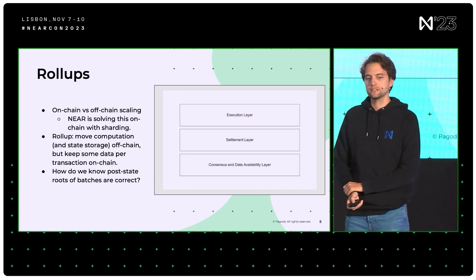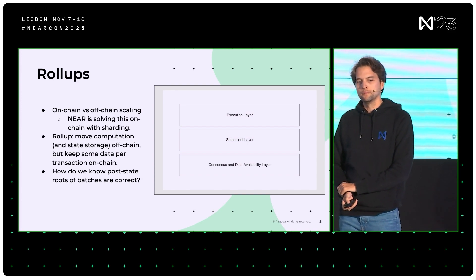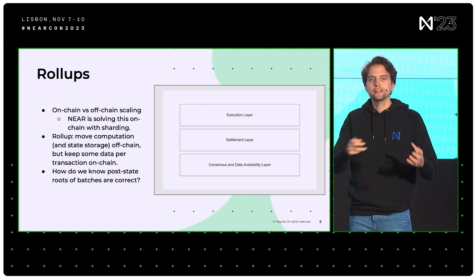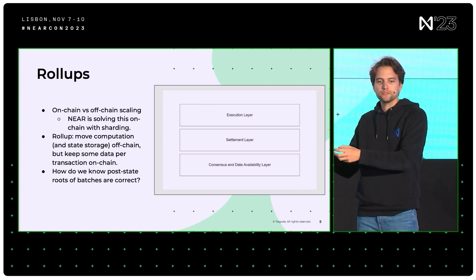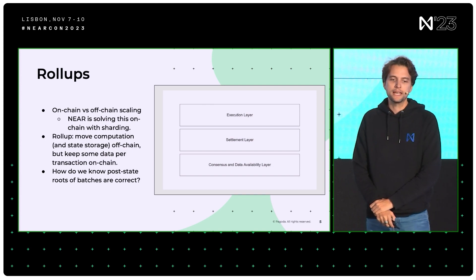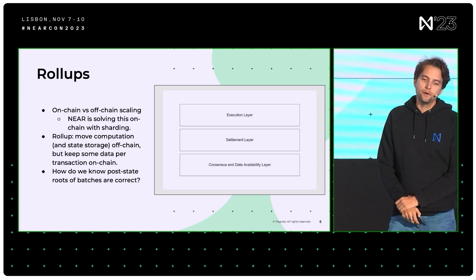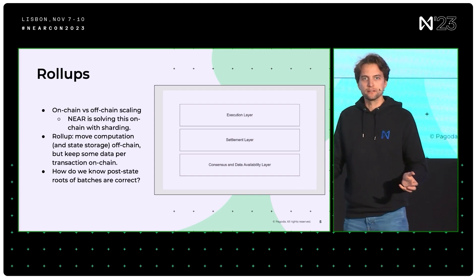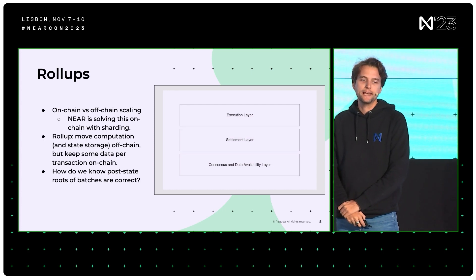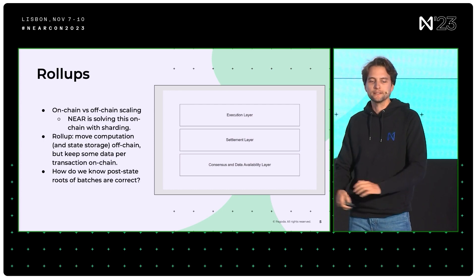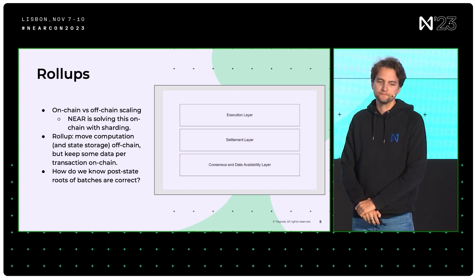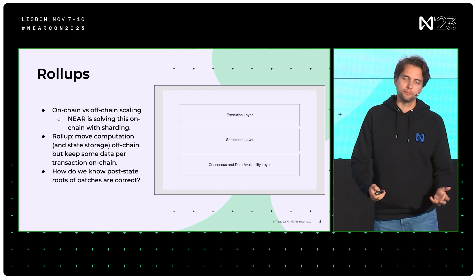How Ethereum is trying to do this is kind of different — same idea, but it's called off-chain scaling. There are multiple off-chain scaling types, but we're going to look into rollups today, because right now that is the one that is picking up.